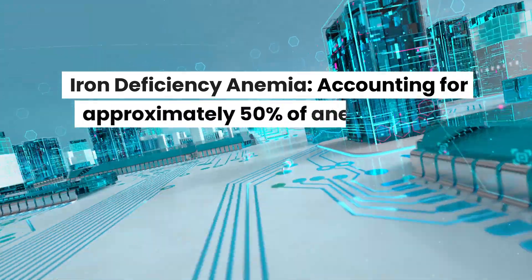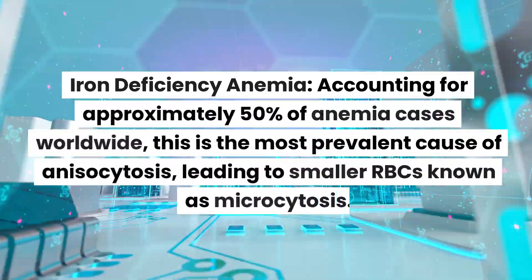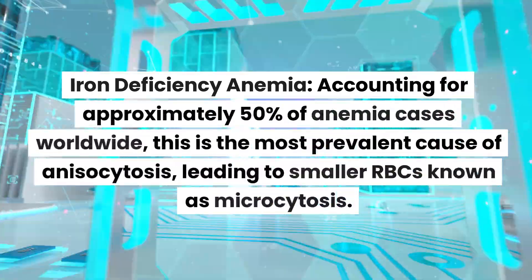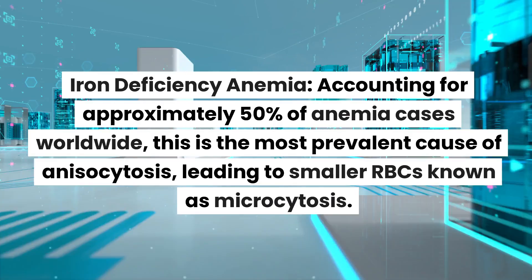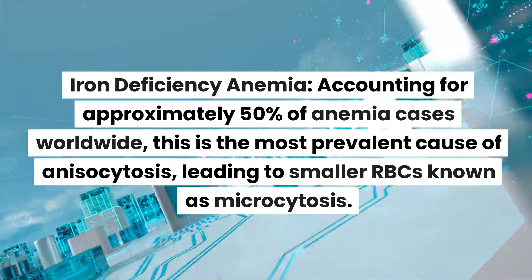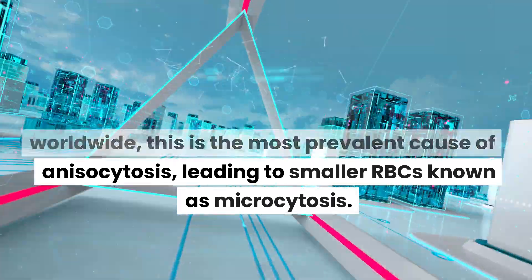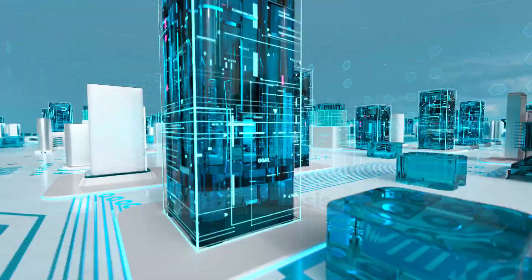Iron deficiency anemia, accounting for approximately 50% of anemia cases worldwide, is the most prevalent cause of anisocytosis, leading to smaller RBCs known as microcytosis.